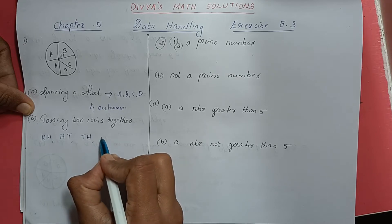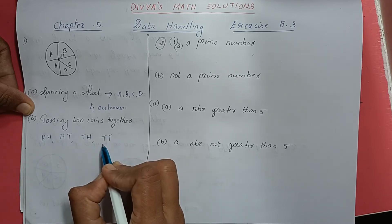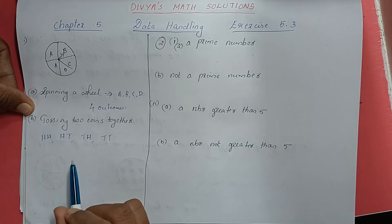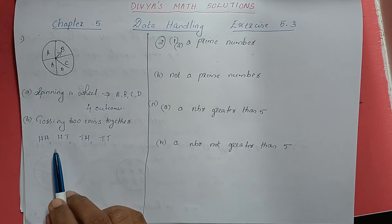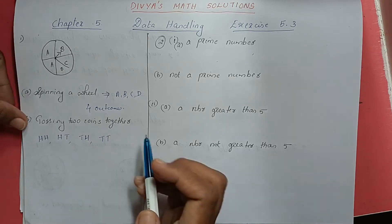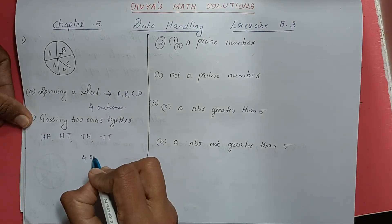Then both coins giving tail is another possibility. So the outcomes are: head-head, head-tail, tail-head, and tail-tail. There are 4 possible outcomes when tossing two coins together.